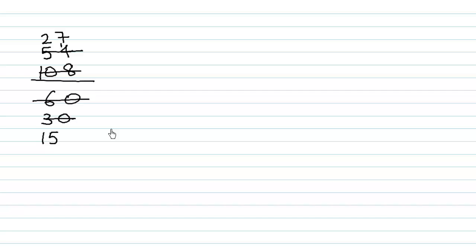15 and 27 don't go in the table of 2, but they go in the table of 3. 3 times 5 is 15, 3 times 9 is 27, giving us 9 over 5. Since 9 and 5 are co-prime numbers, they don't go in any other table except 1.